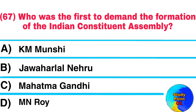Question No. 67. Who was the first to demand the formation of the Indian Constituent Assembly? Answer: M. N. Roy.